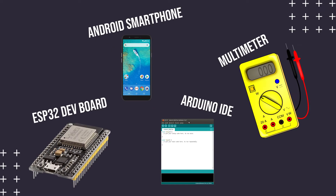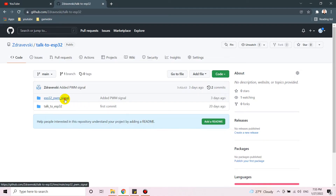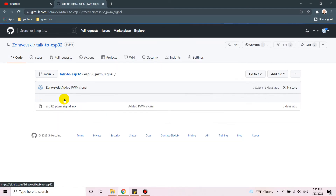Here are the things we are going to need for this experiment: the ESP32 development board, a multimeter, Arduino IDE with ESP32 support installed, and an Android smartphone. Here are the dots where I'm going to put the multimeter's probes.